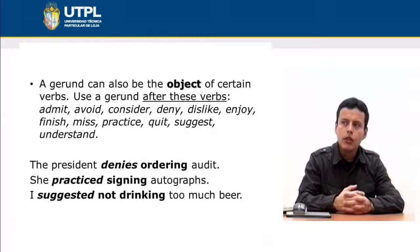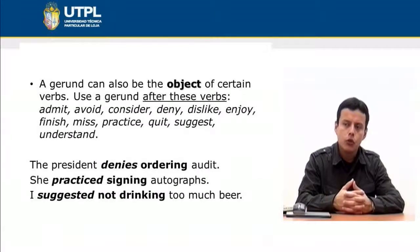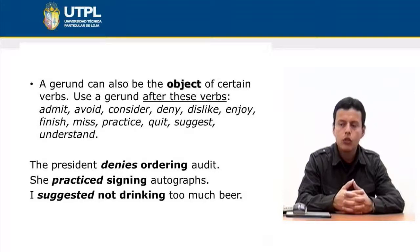A gerund can also be the object of certain verbs. Here are some examples of verbs after which you must use a gerund: admit, avoid, consider, and others. For example: 'The president denies ordering an audit' — after the verb 'deny,' we use the gerund 'ordering.'